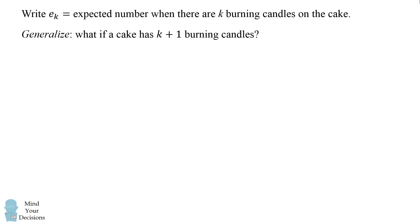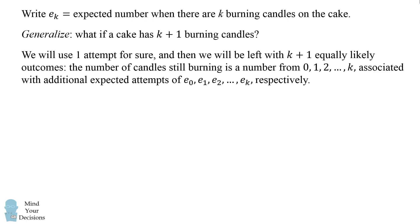So, I generalized this recurrence equation. What if a cake has k plus 1 burning candles? We will use one attempt for sure, and then we will be left with k plus 1 equally likely outcomes. The number of candles still burning will be a number from 0 to k associated with additional expected attempts of e_0, e_1, e_2, all the way to e_k, respectively depending on the number of candles still burning. We can write this in one equation. e of k plus 1 equals 1 for the 1 attempt, plus it will be the average of these k plus 1 possible outcomes. So, we have 1 over k plus 1 times e_0 plus e_1 plus all the way going to e_k.